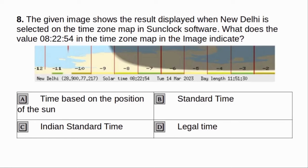The given image shows the result displayed when the noodle key is selected on the time zone map in SunClock software. What does the value 082254 in the time zone map in the image indicate? A. Time based on the position of the Sun. B. Standard time. C. Indian standard time. D. Legal time. Answer: A. Time based on the position of the Sun.